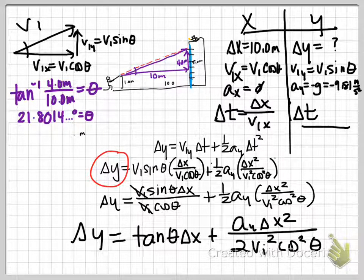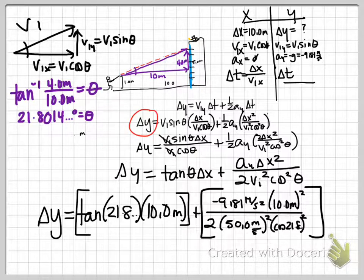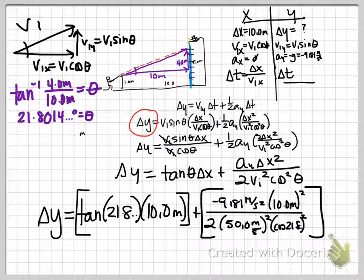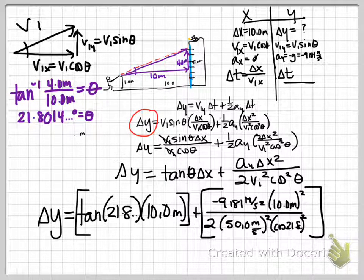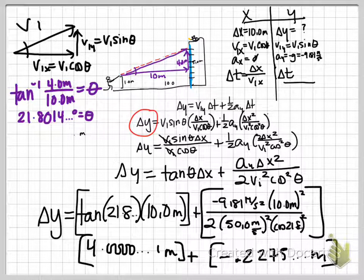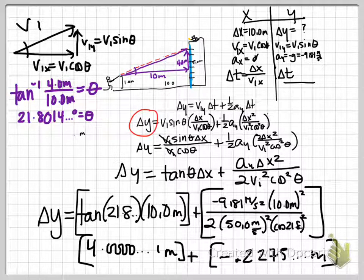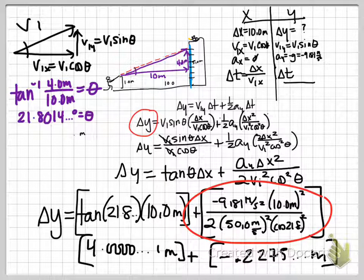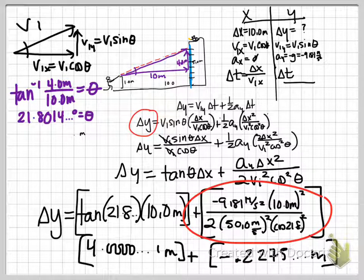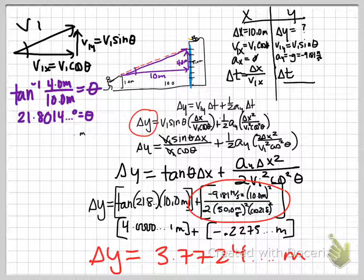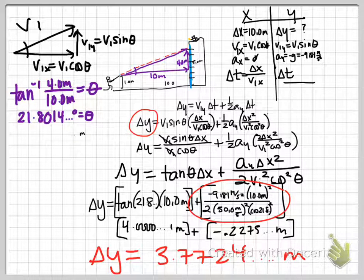Let's go ahead and do that. I make liberal use of brackets and parentheses because they just help keep me from screwing up. They help me see what's where and do my order of operations correctly. Note that you should not round that theta before you do your calculations. I've got as a sort of intermediate step 4.00 out to 1 plus a negative 0.2275. You could do the dimensional analysis on everything in here, and it should come out to meters. You would expect that because we're looking for a delta Y. I get a raw value of 3.7724 meters.